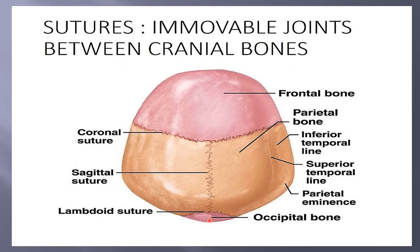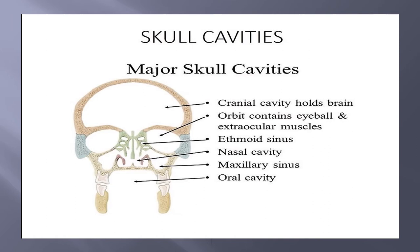This is the occipital bone, which articulates with the parietal bone by the lambdoid suture. We also have the temporal bone, present here, which articulates with the parietal bone by the squamous suture.